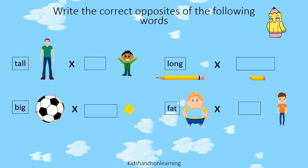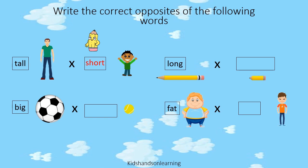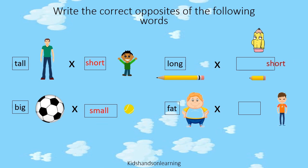Write the correct opposites of the following words. Tall boy — Short boy. Big boy — Small boy. Long pencil — Short pencil.